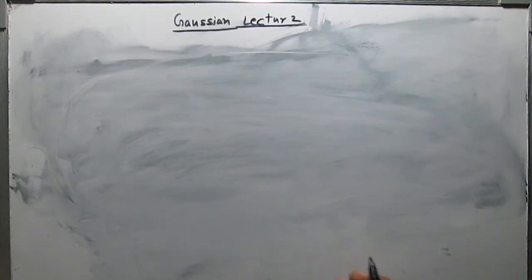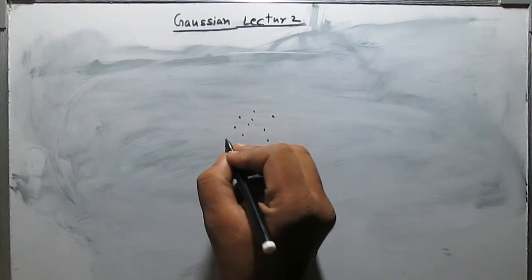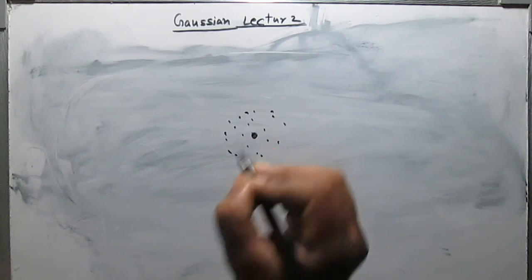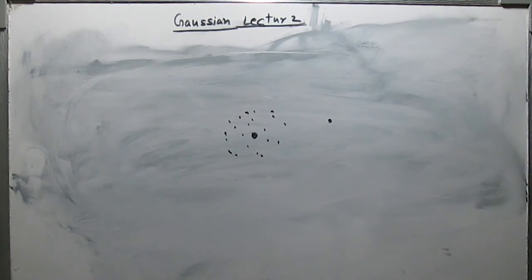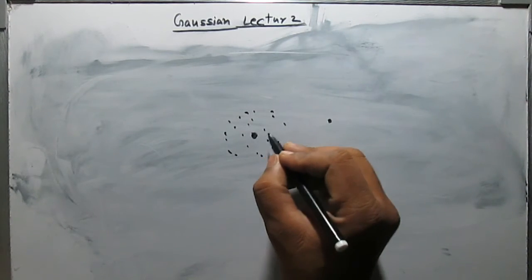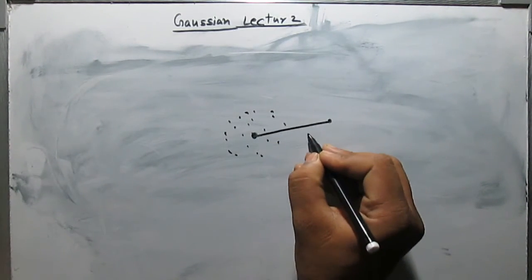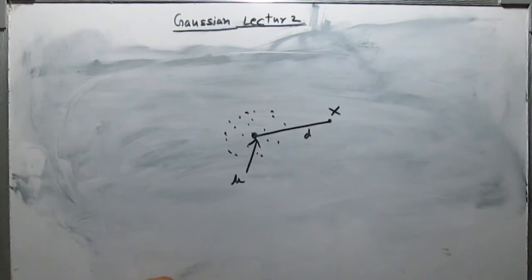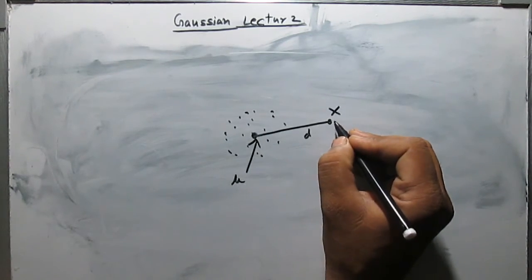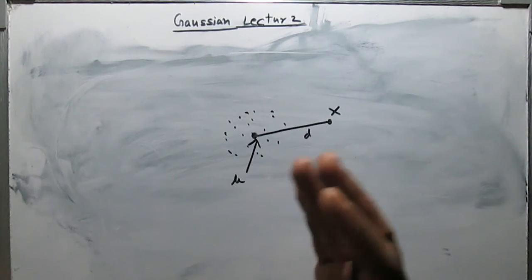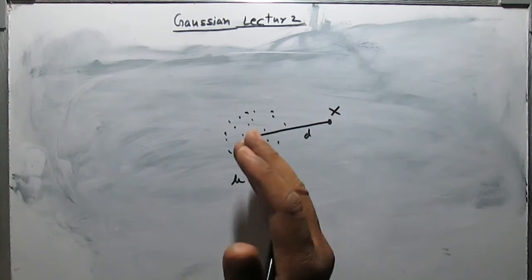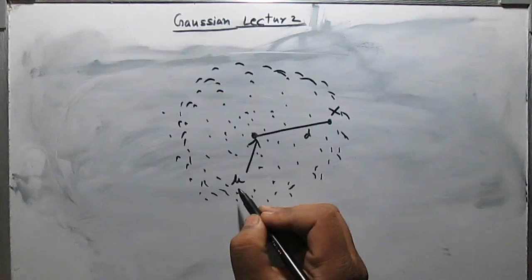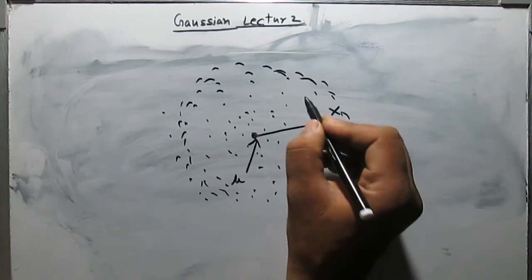Let me take one more example to understand this. Suppose there are some data points and we have mean over here, and consider this data point whose distance is d from the mean. This is the mean and this is the data point x. Here we can easily see that this data point x is an outlier or this data point x may be noise because it is not part of the cluster. But if we increase the spread of the data points, still the mean is mu because we are evenly increasing the data points.